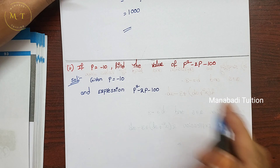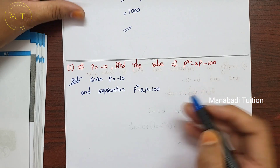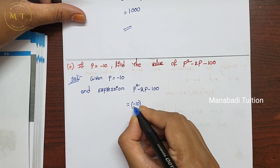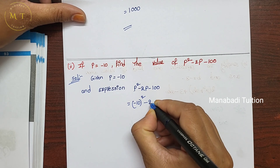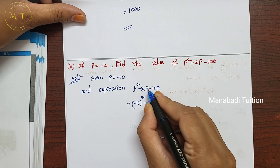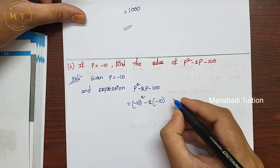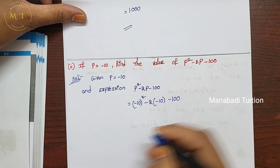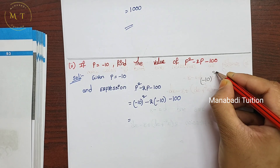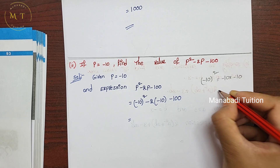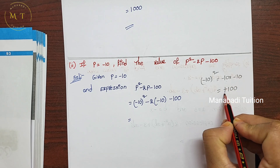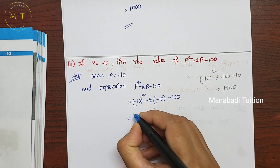Next part: keep the value minus 10 and the expression. Per the expression, P square will be minus 10. Next minus 2, P value minus 10. Here 2 and P multiply. Plus minus 10 comes to 0. And that takes plus 20. So minus 10 square value is minus 10 squared, and we have to multiply 2 times. So 10 times is 100. Minus into minus is plus. Minus 10 squared value is plus 100.